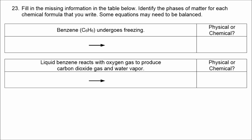Moving on to the section where we write chemical equations for physical or chemical processes. The first one is a physical change — freezing — so the formula of benzene is the same on both sides of the arrow, going from a liquid to a solid.